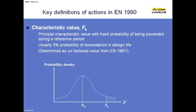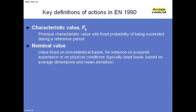The first important definition is the characteristic value. K is used as a subscript for characteristic — not C, because C is used for concrete — so we write FK. A characteristic value of an action is defined as a principal value with a fixed probability of being exceeded during a reference period. Normally this means a 5% fractile value over a reference period equal to the design life. But the realistic definition is: it's basically the action you get when you go into Eurocode 1 and work it out — that's the default, you get the characteristic value.